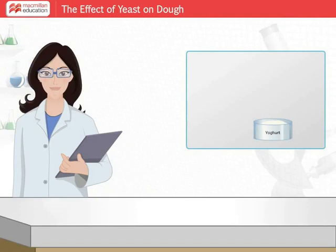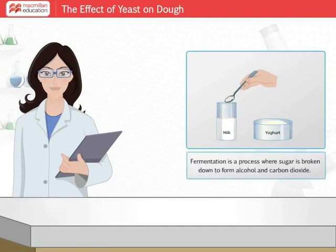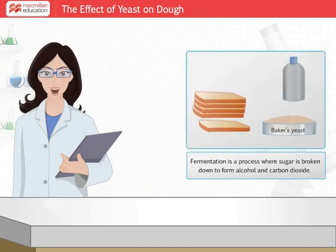Welcome to the science lab. Do you know what yogurt is? Yogurt is a fermented product prepared from milk. To prepare yogurt, a yogurt culture containing bacteria is added to milk for fermenting it. Fermentation is a process where sugar is broken down to form alcohol and carbon dioxide. This process is also used for making bread and alcoholic beverages.